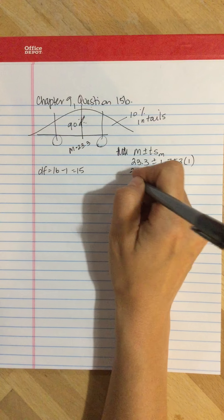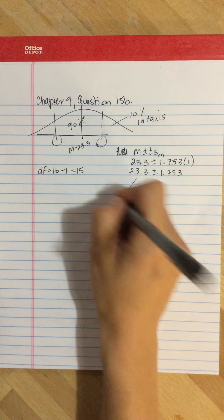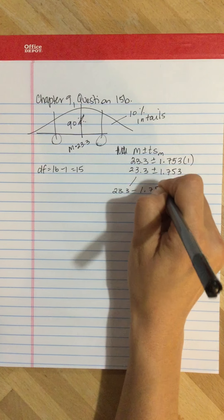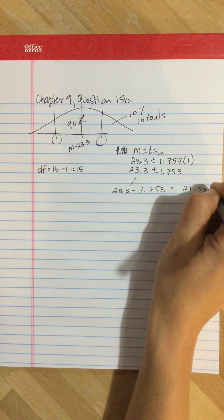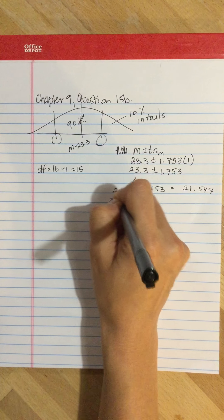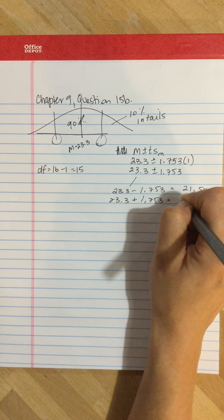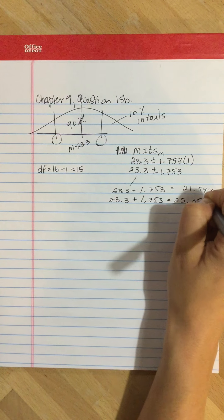This yields two numbers. 23.3 subtract 1.753 equals 21.547, and 23.3 plus 1.753 equals 25.053.